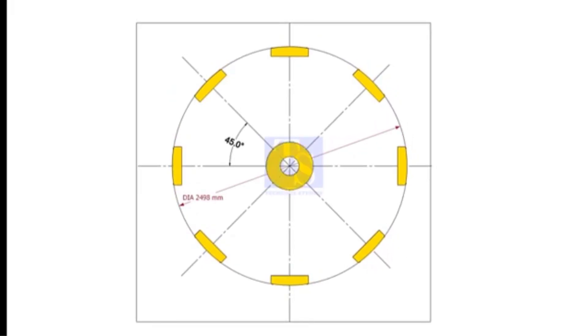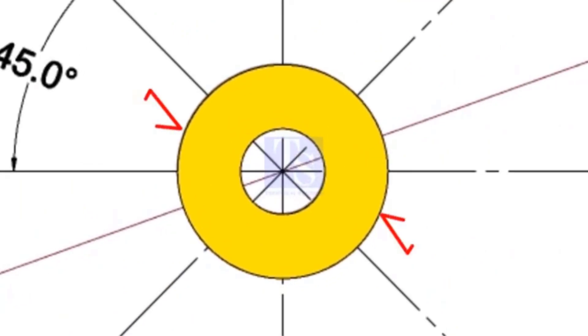Put one center ring exactly on the center of the circle. Tack weld the ring with the plate at two locations to prevent moving.